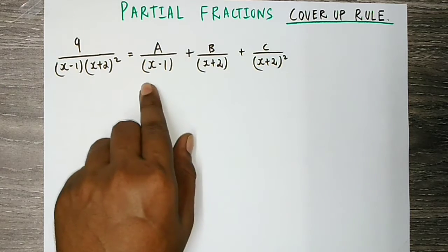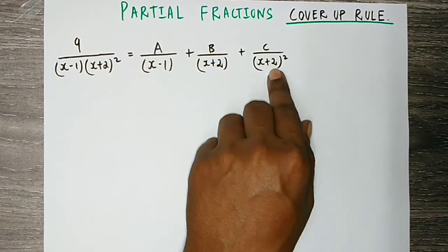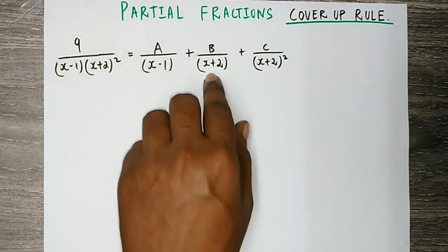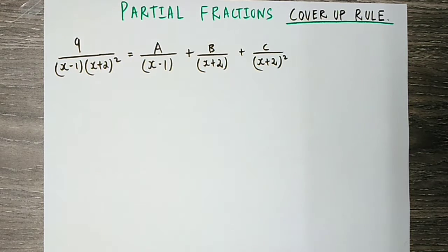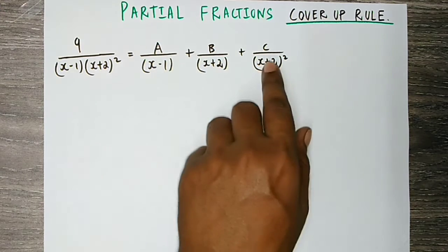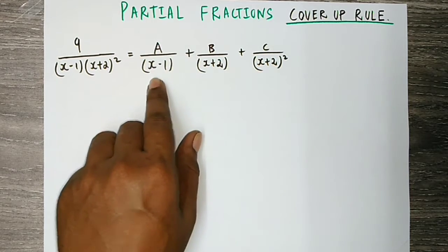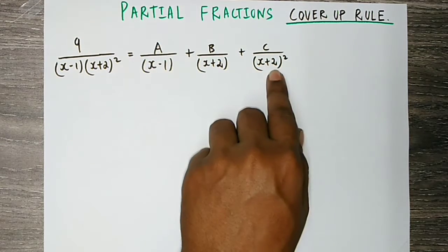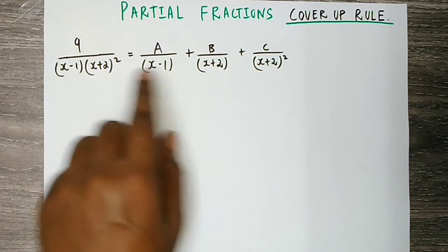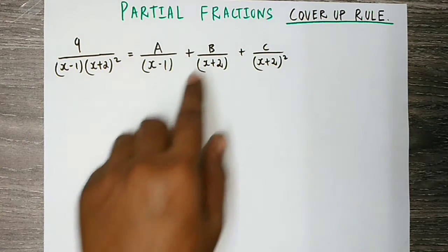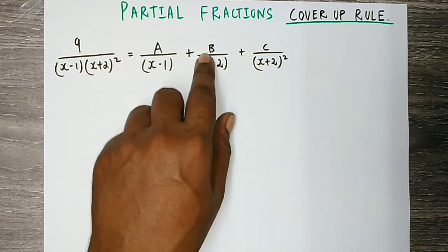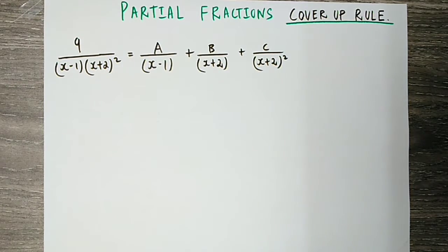This is (x minus 1)(x plus 2) whole square on the left-hand side denominator. If you want to find x plus 2 as a factor, we will check using the Type 2 method. We talk about A divided by (x minus 1) and C divided by (x plus 2) whole square. Here, x plus 2 is cut.